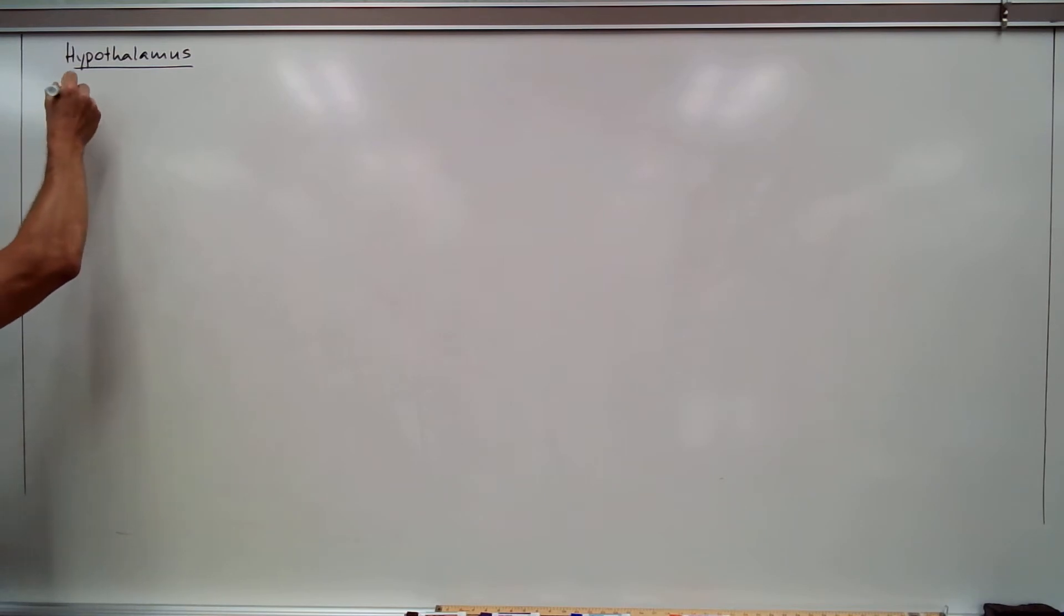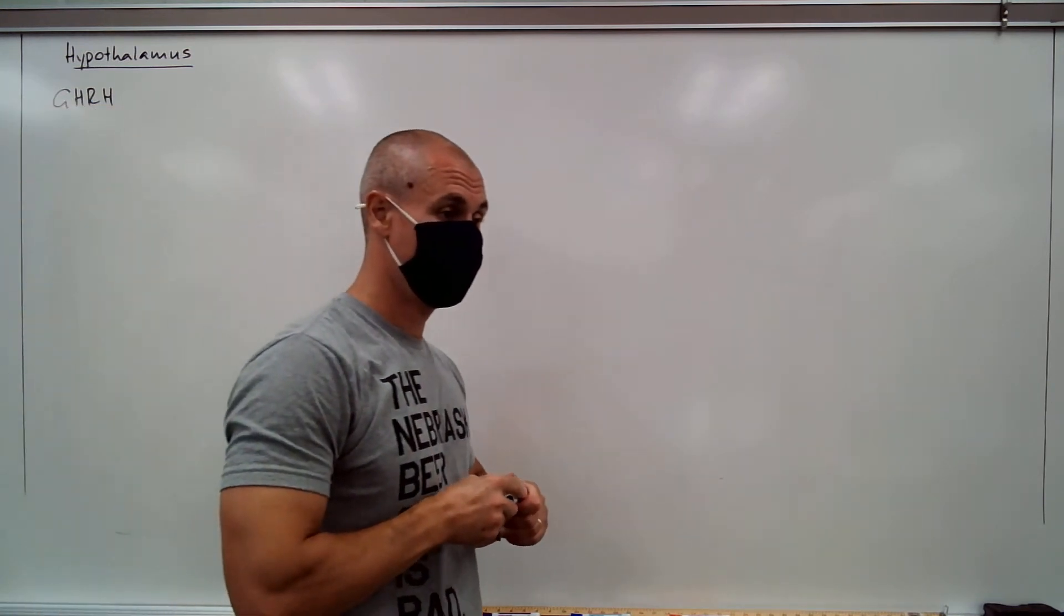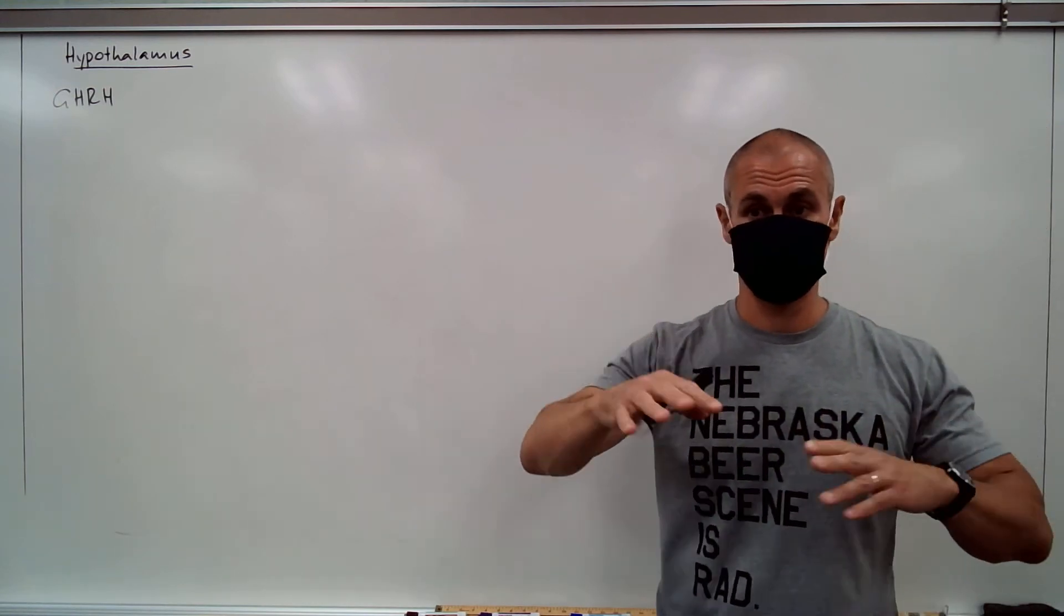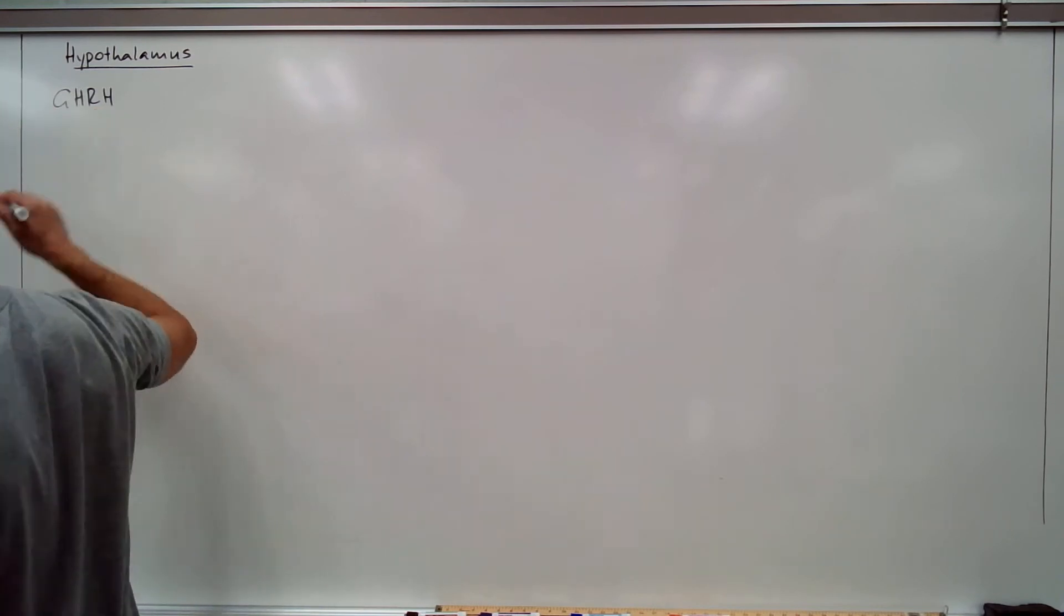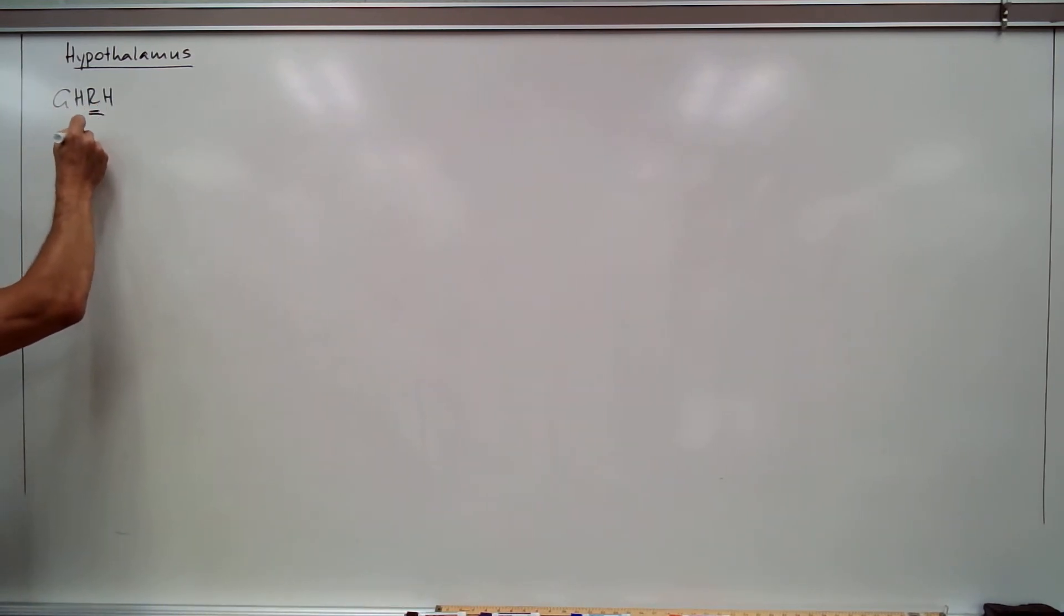So growth hormone releasing hormone, GHRH. A lot of them are abbreviated. You have all the full names in the notes. Growth hormone inhibiting hormone, GHIH. The names basically give away what the hormones do. So what does GHRH do? It releases growth hormone. GHIH inhibits growth hormone.